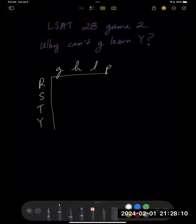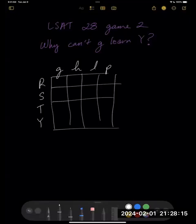We can create a chart here. For each column, we'll check off the language learned by that researcher. At the start, we know they each learn at least one and at most three languages.